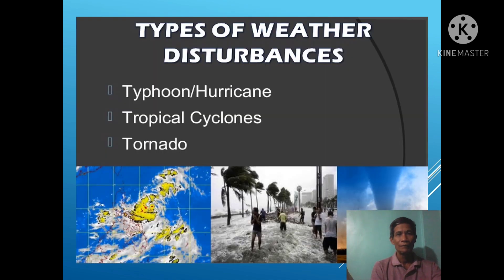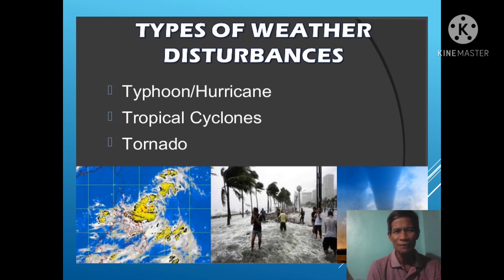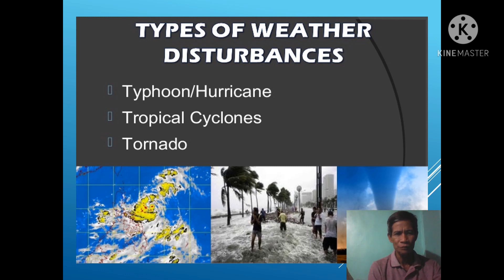These are the types of weather disturbances. Number one: typhoon or hurricane. Two: tropical cyclones. Three: tornado.